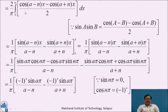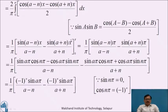Which is equal to (2/π) ∫₀^π [cos(a−n)x − cos(a+n)x] / 2 dx. Here the two will get cancelled. We know sin(A)sin(B) = [cos(A−B) − cos(A+B)] / 2, which equals (1/π). Now integrating with respect to x: integration of cos(a−n)x is sin(a−n)x / (a−n), and integration of cos(a+n)x is −sin(a+n)x / (a+n), with limit 0 to π. Putting the upper limit: (1/π) [sin(a−n)π / (a−n) − sin(a+n)π / (a+n)].